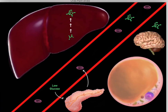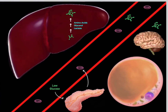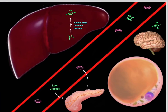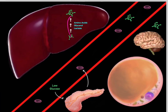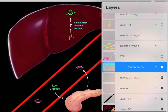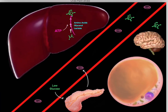To perform gluconeogenesis and biosynthesize glucose molecules, the liver needs a source of carbons — because glucose is a six-carbon carbohydrate. The primary carbon sources are amino acids, glycerol, and lactate. Importantly, gluconeogenesis is an anabolic process, so building these glucose molecules requires ATP.